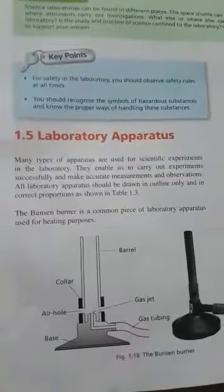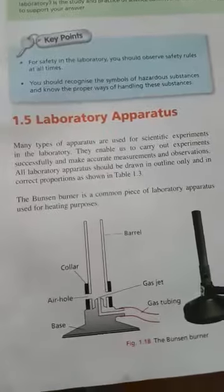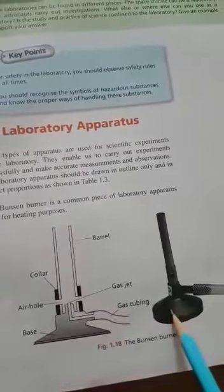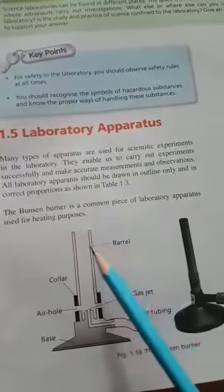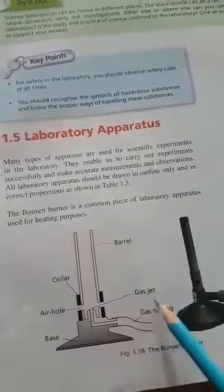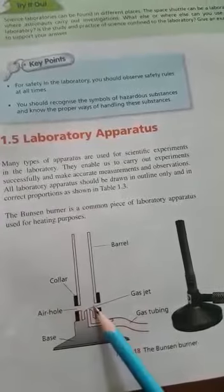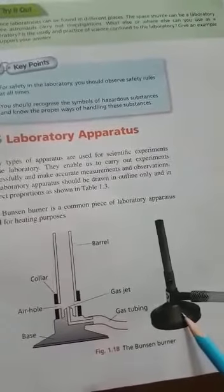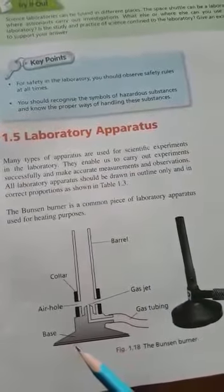Here is our laboratory apparatus. You can see the diagram — its name is the Bunsen burner. This is the Bunsen burner that you will use in the laboratory to heat different things. It has a barrel, gas jet, gas tubing, base, air hole, and collar. The Bunsen burner is used for heating purposes.